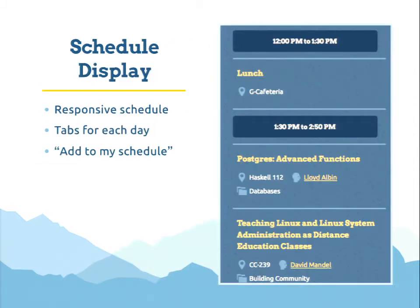After you've built out your whole grid, you have the schedule display. It was really important to have a responsive schedule so users can look on their desktop, set up their schedule, and then when they're walking through the fest they can see it on their phone — seeing what they're going to next in a really clear, concise way.